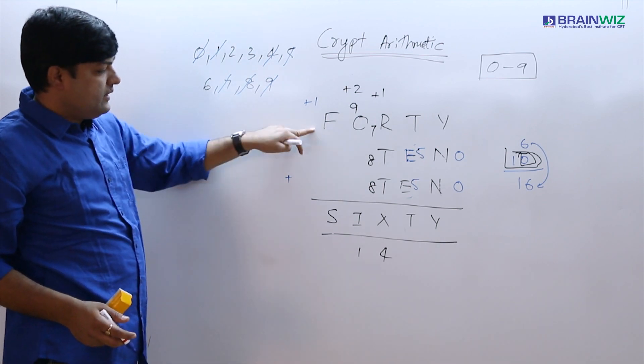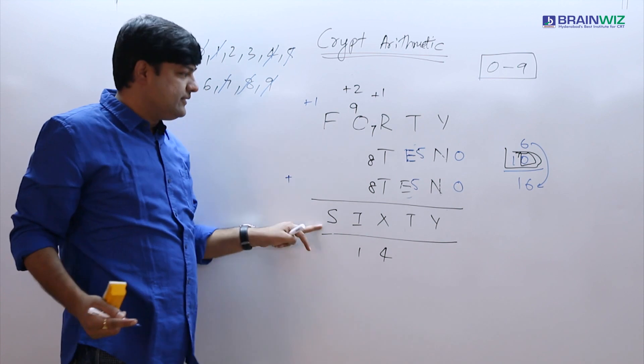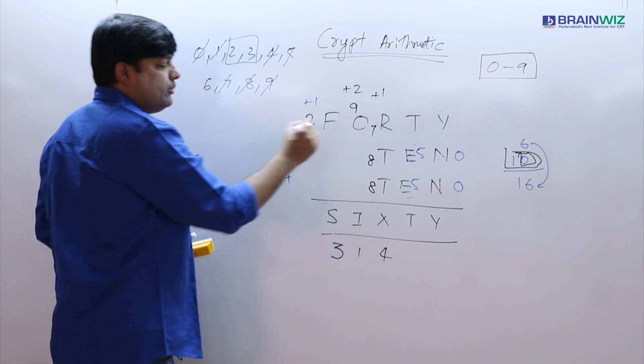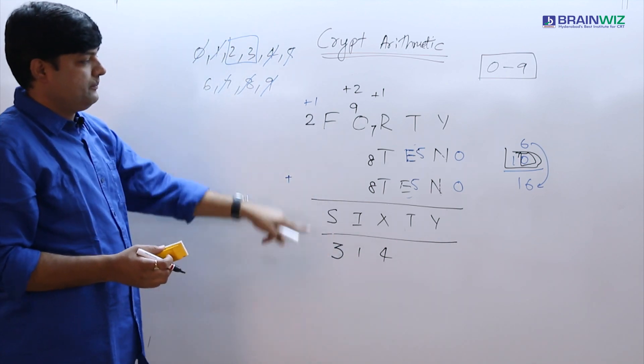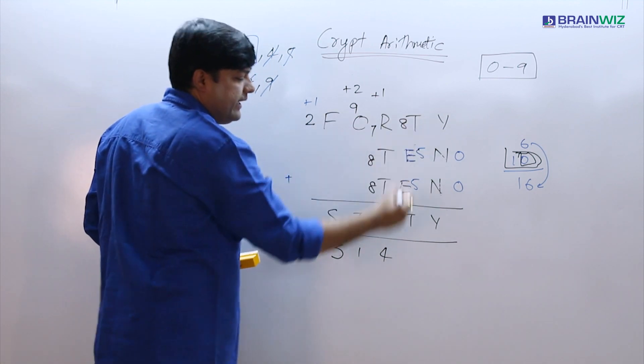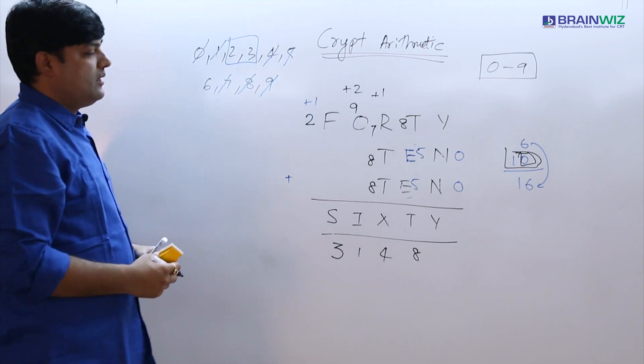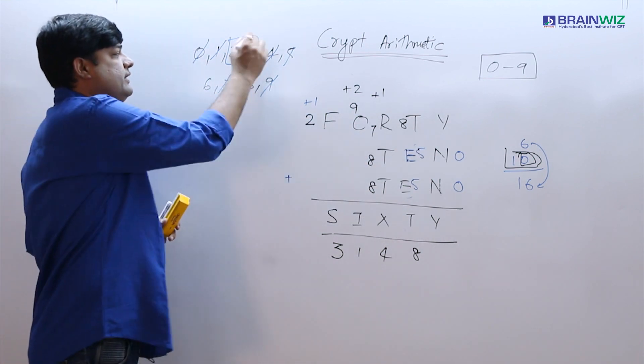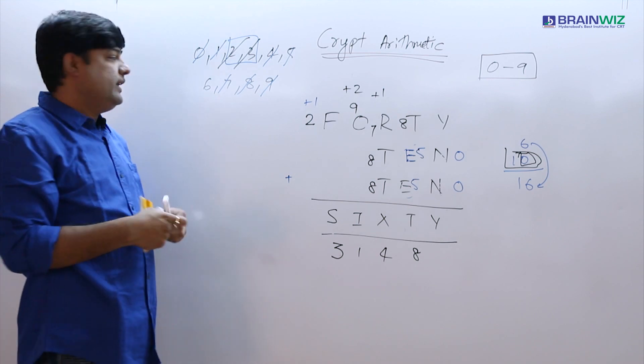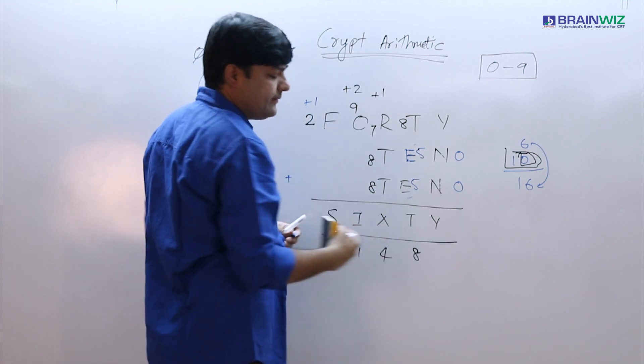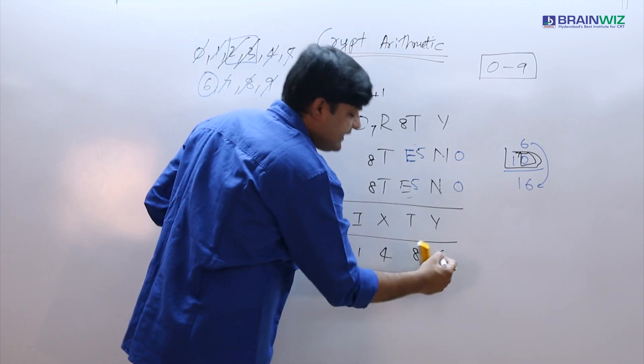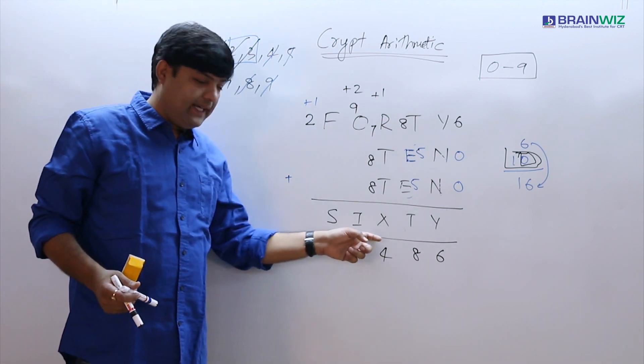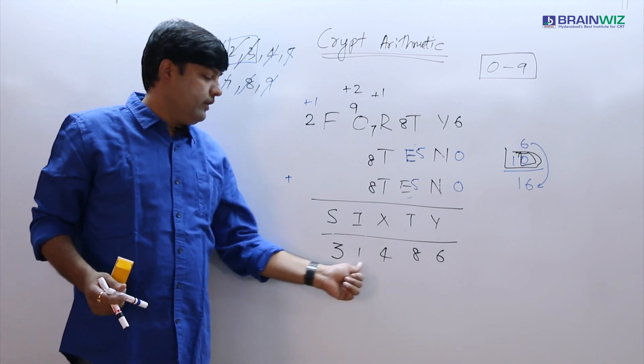Now let us see the relationship between F and S. S is just one more than F. These are the best suitable numbers which can match here. This digit can be 3, this digit can be 2. Now it is matching. As you know that T value is 8, we can copy T value is 8. Now the only digit which is left is Y. In the given digits, when we have utilized all the digits, the only digit which is missing is 6. So if you put the digit 6 and 6, the value of 60 is S I X T Y, that is 3 1 4 8 6.